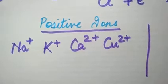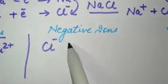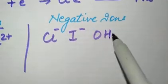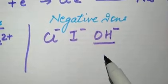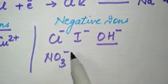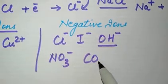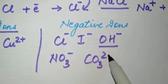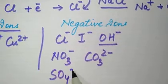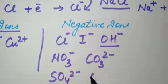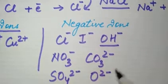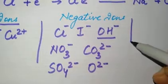For negative ions: chloride ion (Cl⁻), iodide (I⁻), hydroxide (OH⁻), nitrate (NO₃⁻), carbonate (CO₃²⁻), sulfate (SO₄²⁻), and oxide (O²⁻). You need to learn all these — it is very very important to learn all the ions given in your book along with their charges.